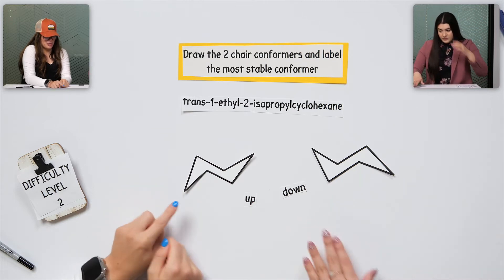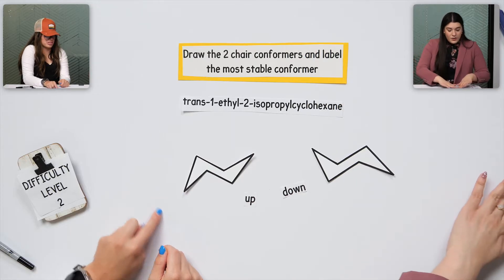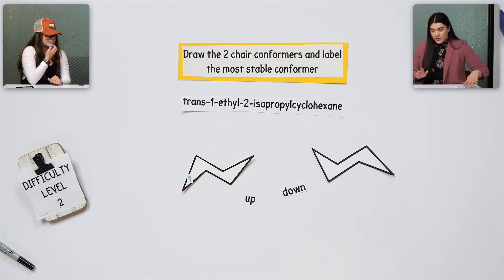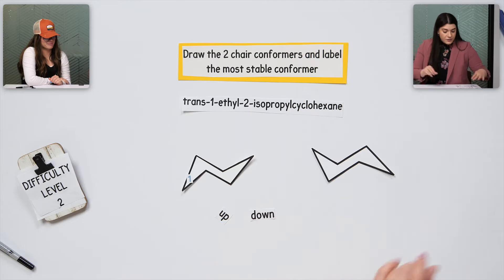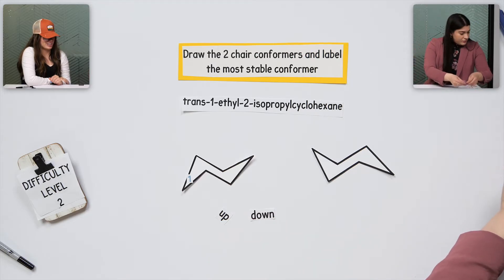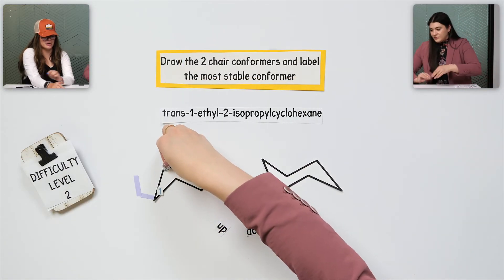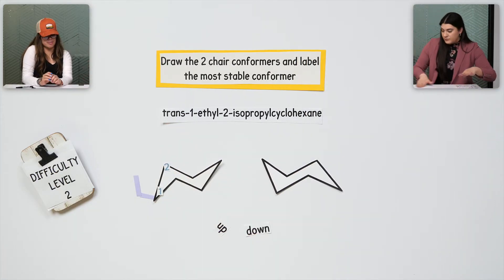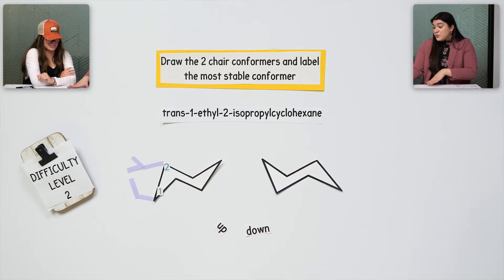One ethyl — there's going to be two carbons branching off of it. So we're saying this is carbon one. An ethyl has two carbons. Let's build that. Isopropyl will have three carbons coming off of it and they're going to look like a Y shape. So that's one option.